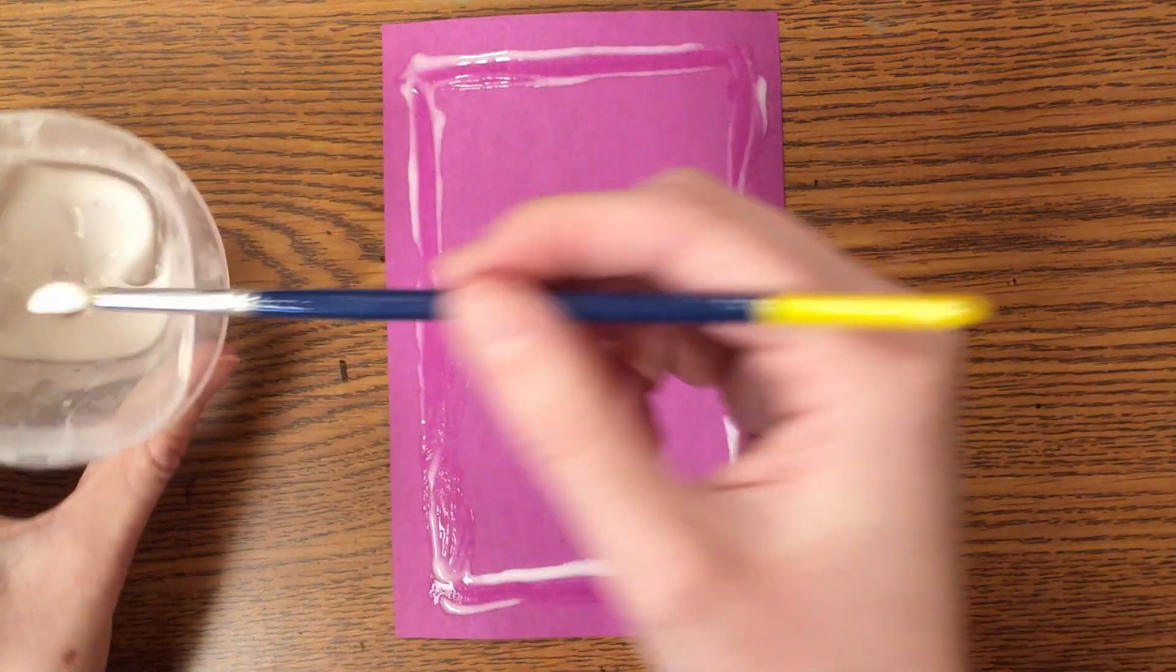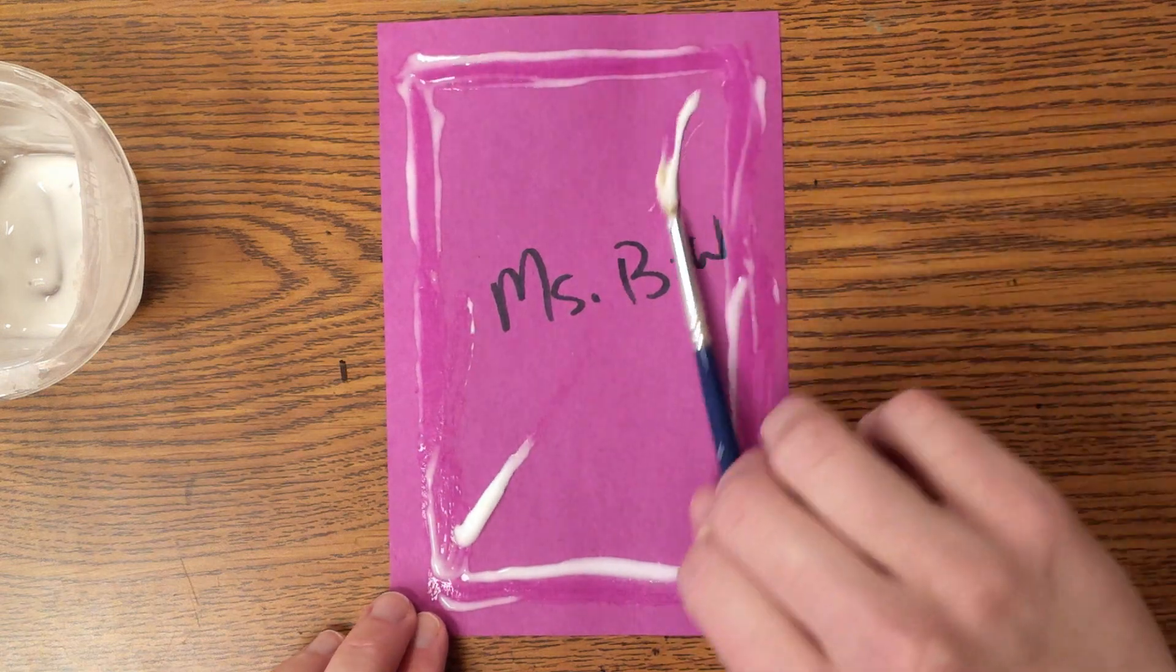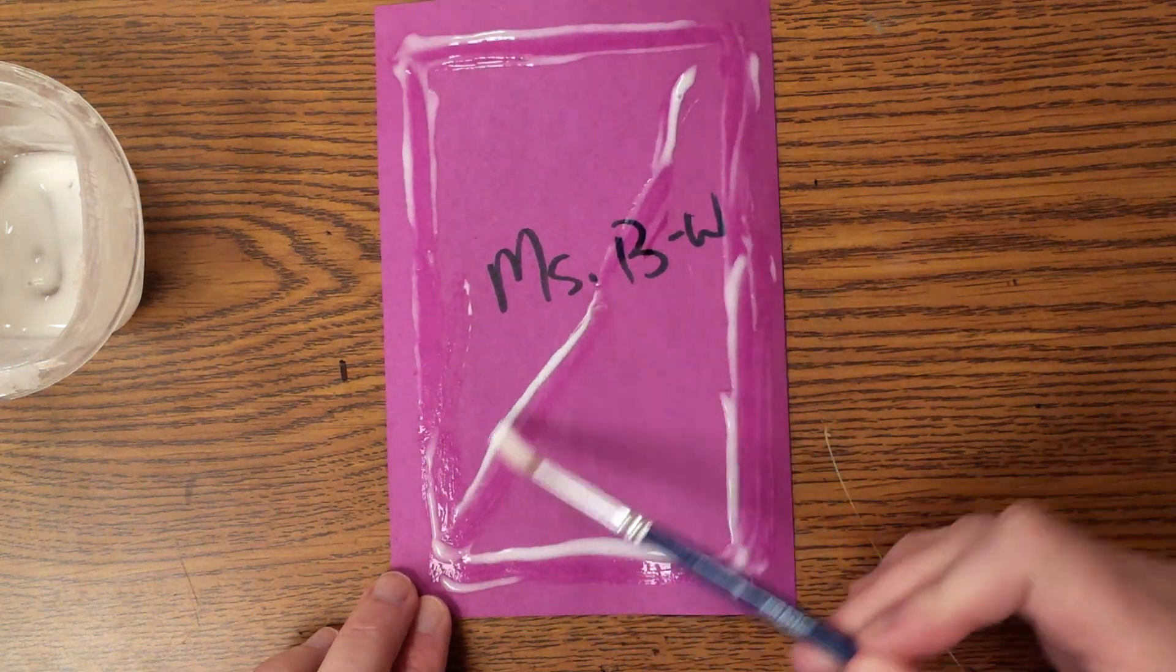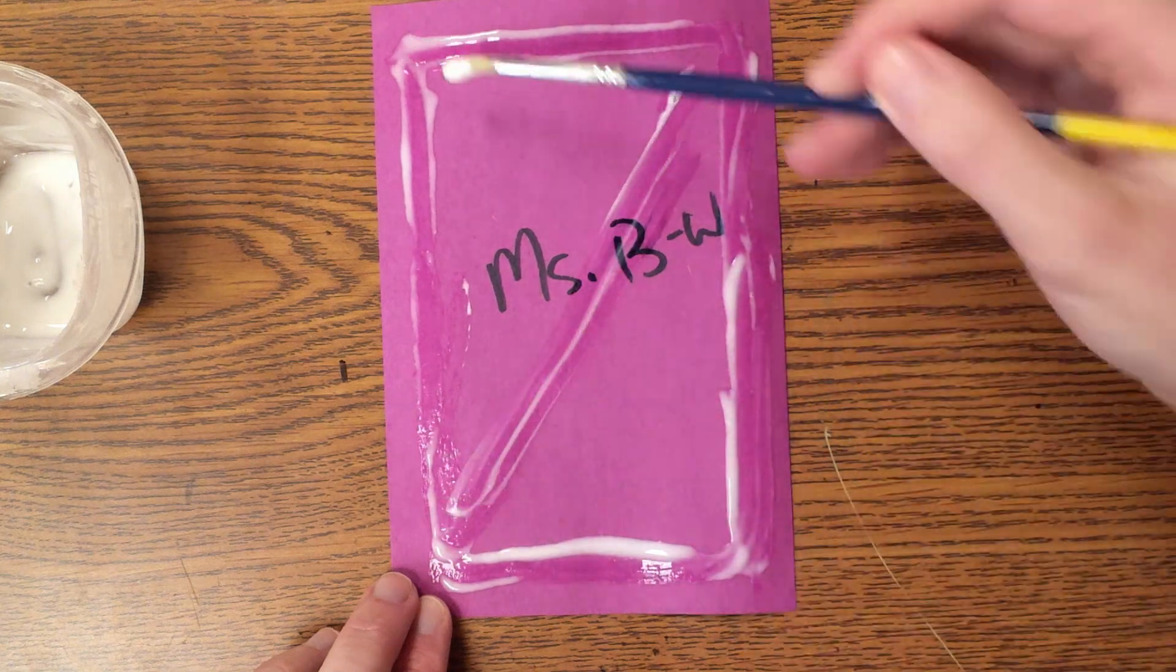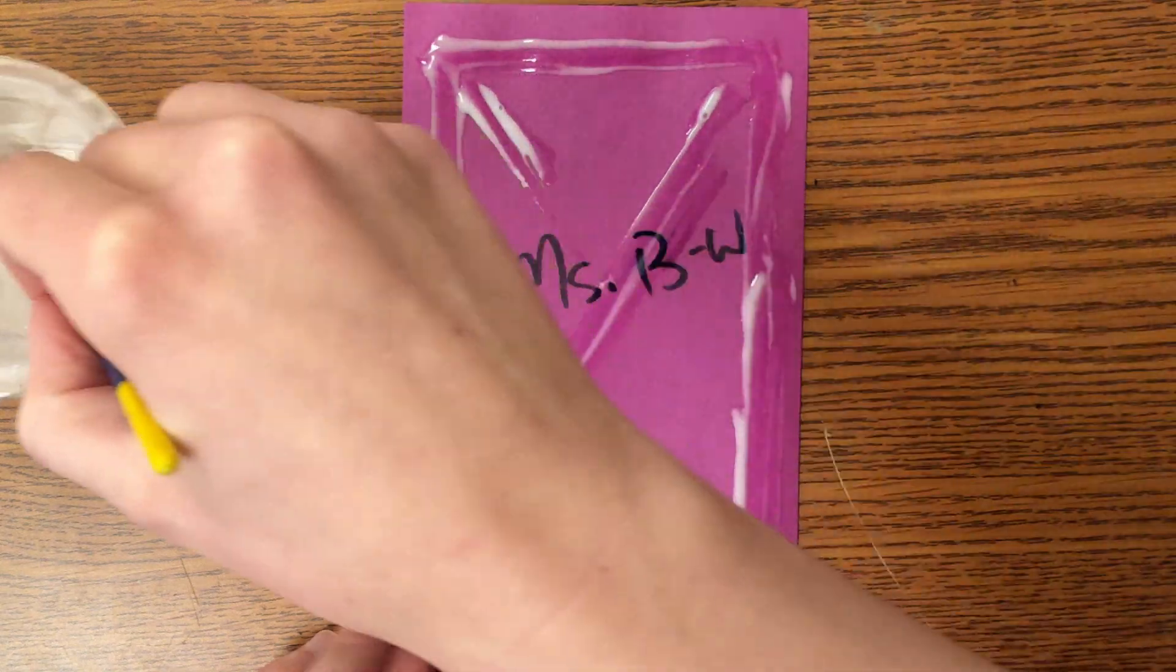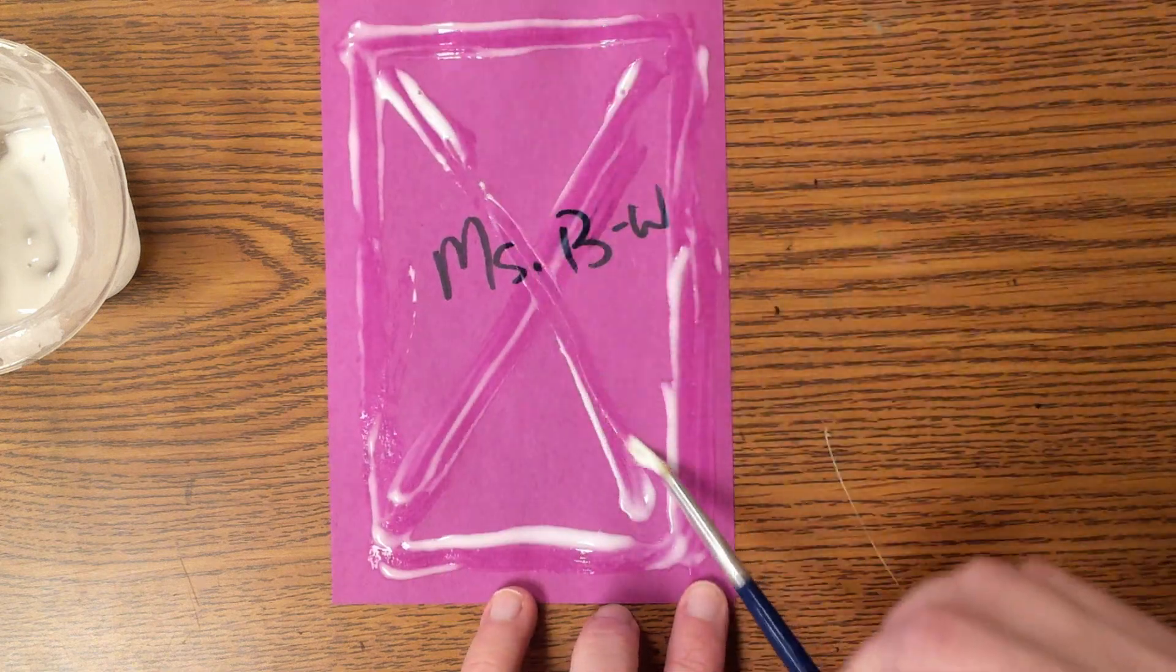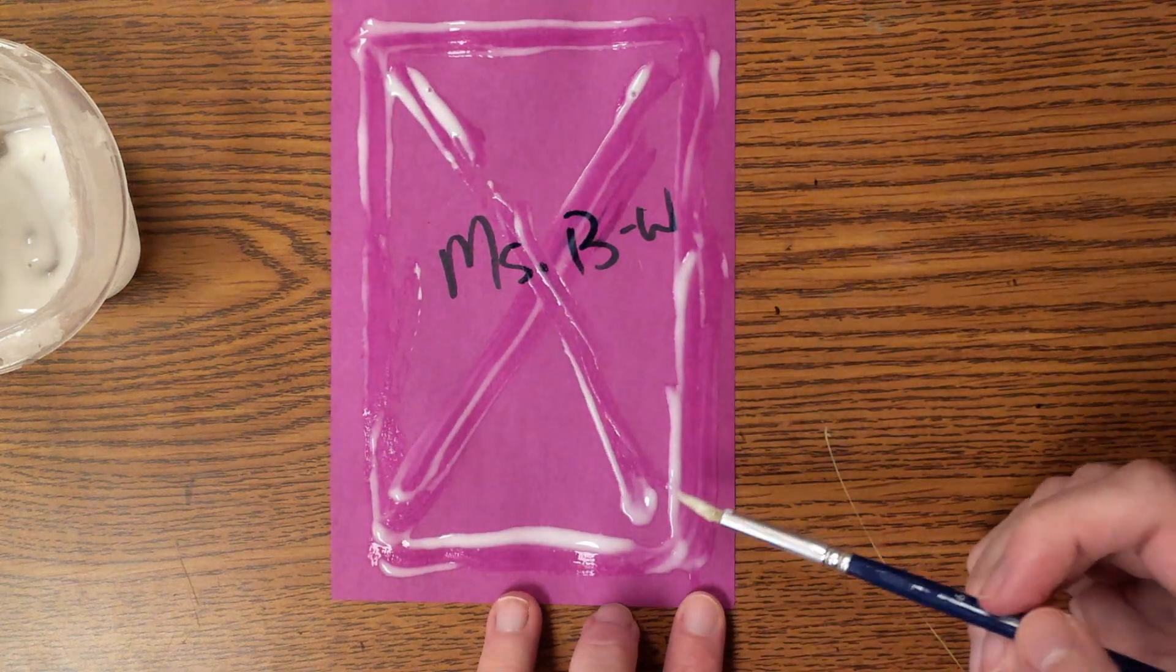No. I want to also make an X through the middle. Should I leave the glue like this? No, I should spread it out with the paintbrush. There we go.